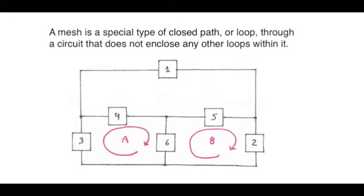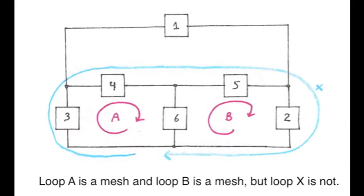This loop qualifies as a mesh, and loop B to the right also qualifies as a mesh. However, the loop X seen here does not qualify as a mesh. It is a closed path but it encloses two other loops. All meshes are closed paths, but not all closed paths are meshes. A mesh does not enclose other loops or elements. Loops A and B qualify as meshes. Loop X does not.